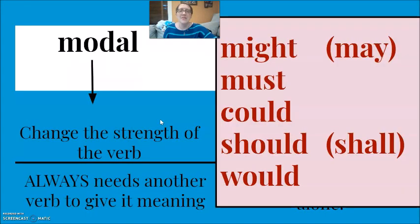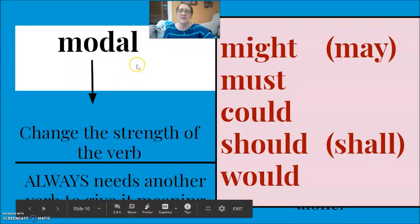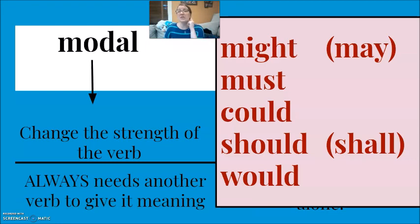And then, I want to come back to this note I have at the bottom that it always needs another verb to give it meaning. Now, sometimes you will hear people say, I could. And the sentence is done. But this is during a conversation exchange or a sentence exchange. And there is always an assumed, an unspoken verb connected to it. For example, will you go to the store today? I should. I don't say it, but the feeling is, I should go to the store today. That verb is deleted, but it's still there in the deep meaning of the sentence.